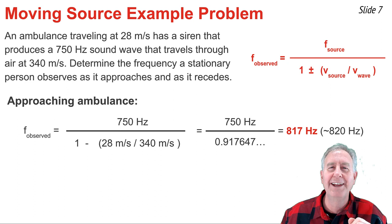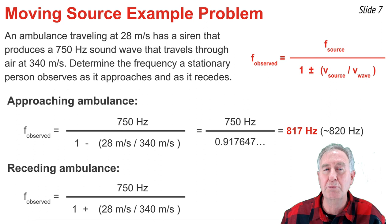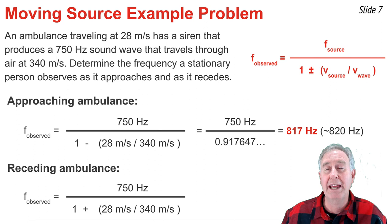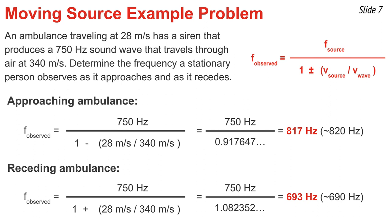Now repeating the same process with all the same numbers for the case of the ambulance moving away from the observer, all numbers go in the same places. The only difference is I use the plus sign in the denominator, making that denominator greater than 1. Evaluating the denominator and then dividing 750 by it, I get a result of 693 hertz, or about 690 hertz.